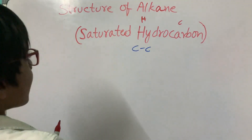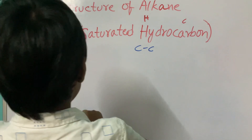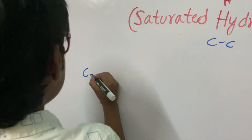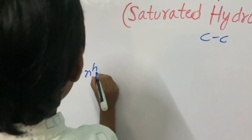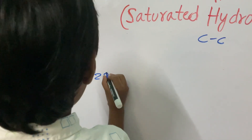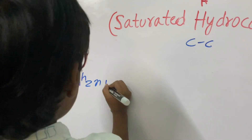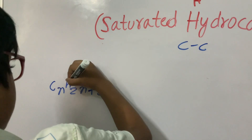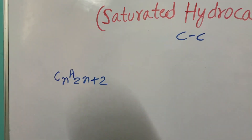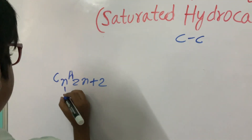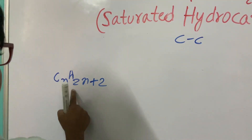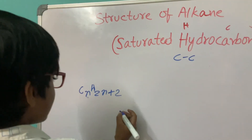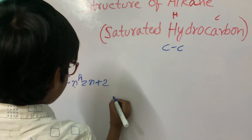The formula for Alkane is CnH2n+2, where n is the number of carbon atoms. For example, let's take butane.